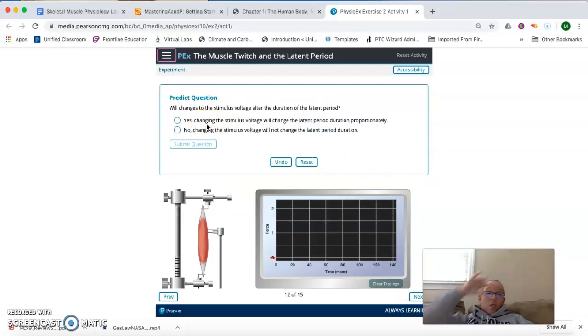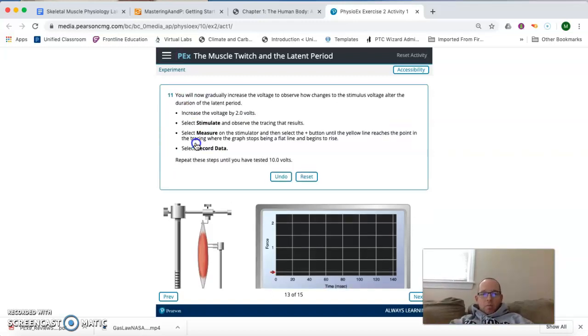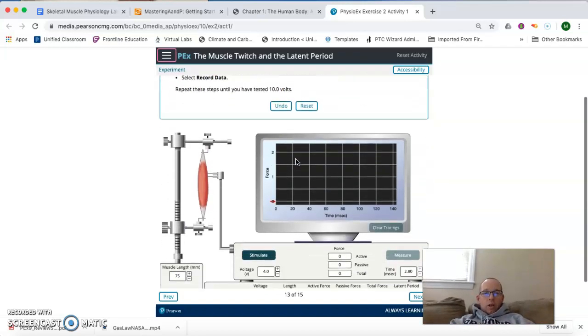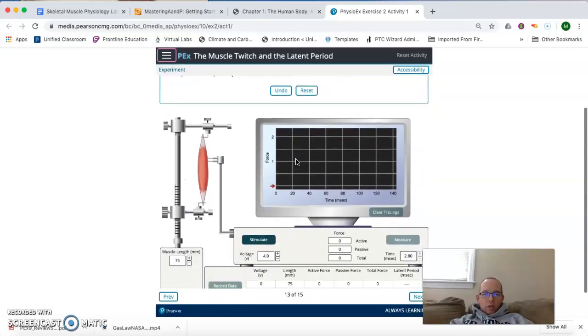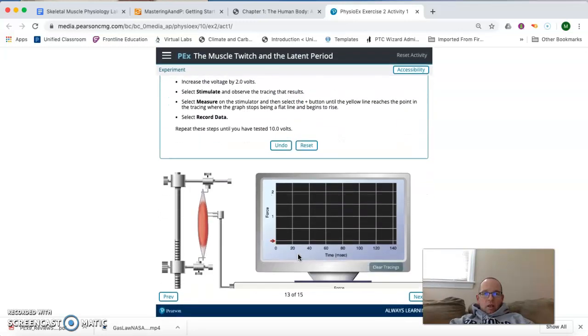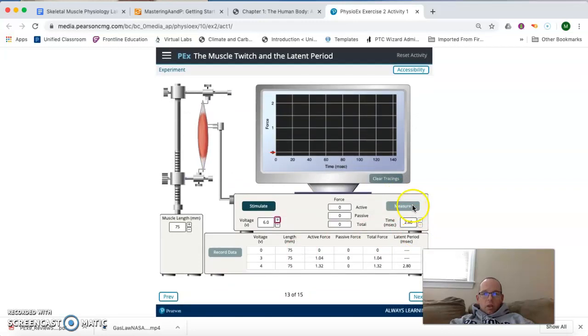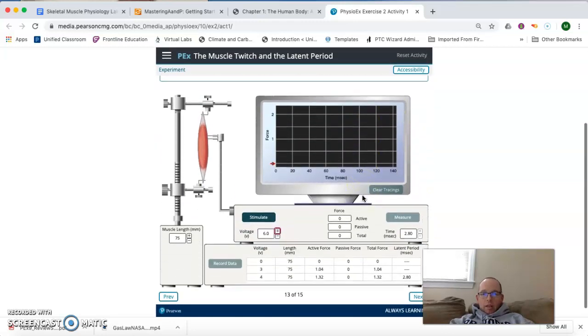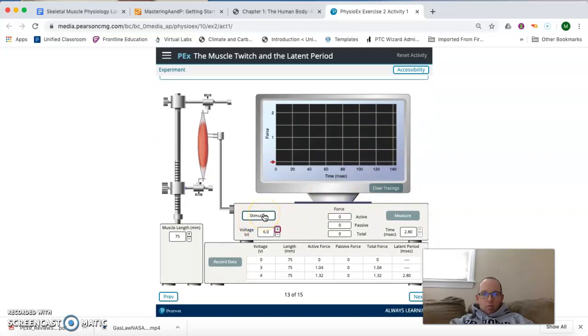And we need to predict whether or not the changes to the stimulus voltage will alter the duration of the latent period. There's no right or wrong here. You're going to find out. And I'm going to say that, yes, changing the voltage will change the latent period. The bigger the voltage, the longer the latent period. You may disagree, but we'll find out one way or the other right now. So, we're going to go ahead and increase the voltage by 2 volts. So, we're going to go from 4 to 6. We're going to stimulate. We're going to observe the tracings. We're going to measure the latent period, just like we did before. And then, we're going to record that.